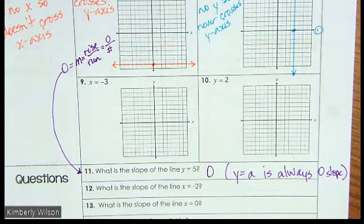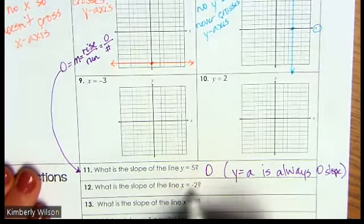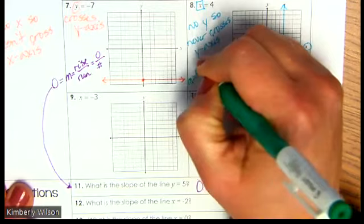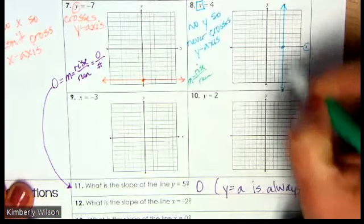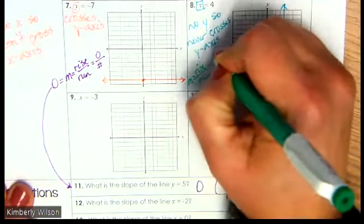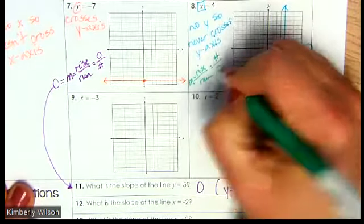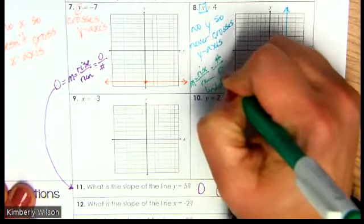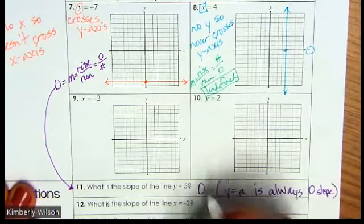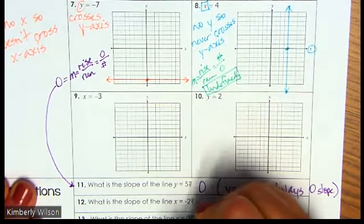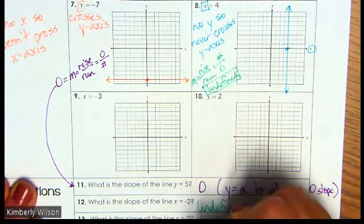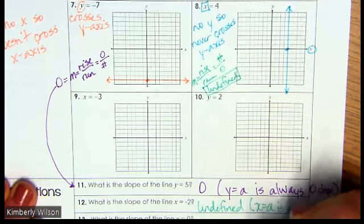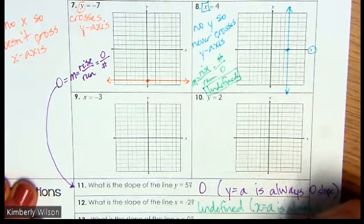Let's look at number 12 — this is x equals. Referring to x equals negative 2. Slope is rise over run. I'm going up and down all day long, but am I going left or right at all? No — that's a zero in the denominator. Anytime there's a zero in the denominator, this is undefined. So x equals negative 2 is classified as undefined. That's always the case: when it's x equals a number, the slope is always undefined.